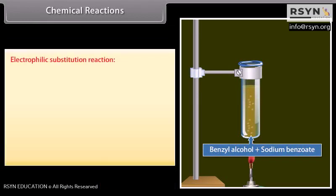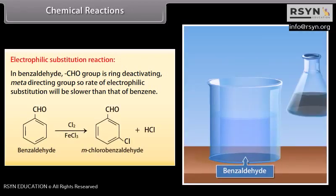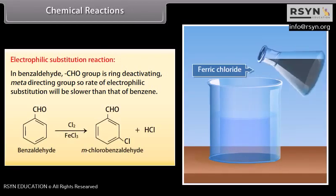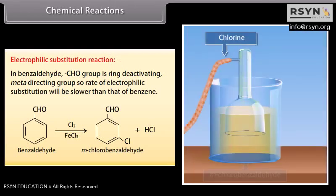Electrophilic substitution reaction: in benzaldehyde, the aldehyde group is a ring-deactivating, meta-directing group, so the rate of electrophilic substitution will be slower than that of benzene. Benzaldehyde reacts with chlorine and ferric chloride solution to form meta-chlorobenzaldehyde and hydrochloric acid.